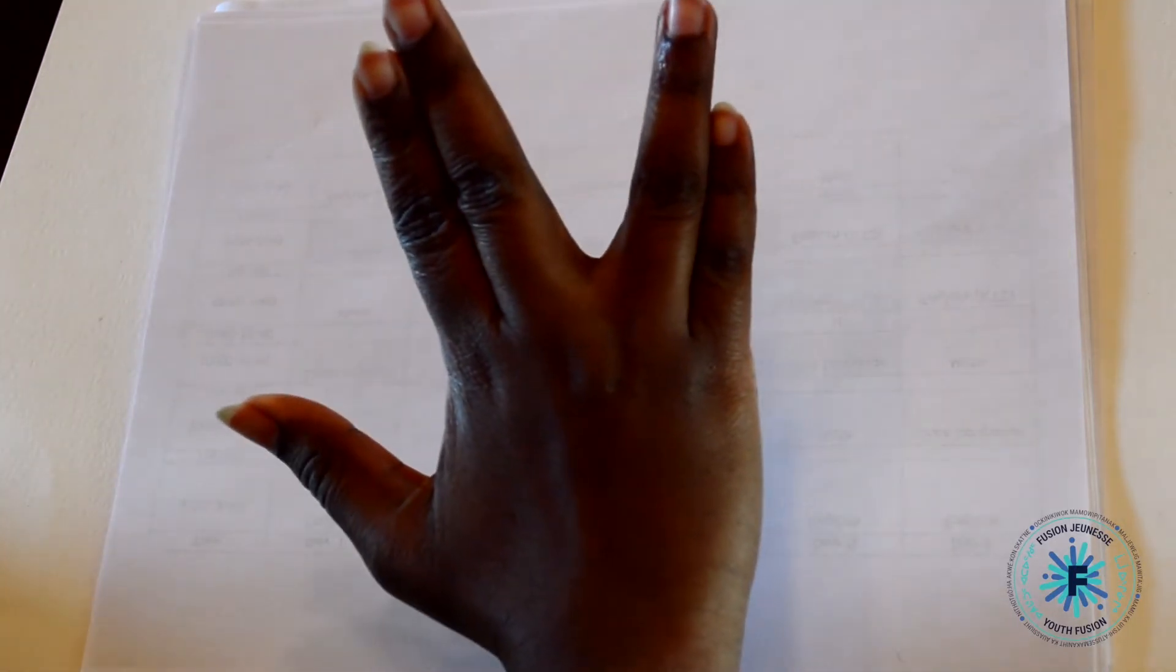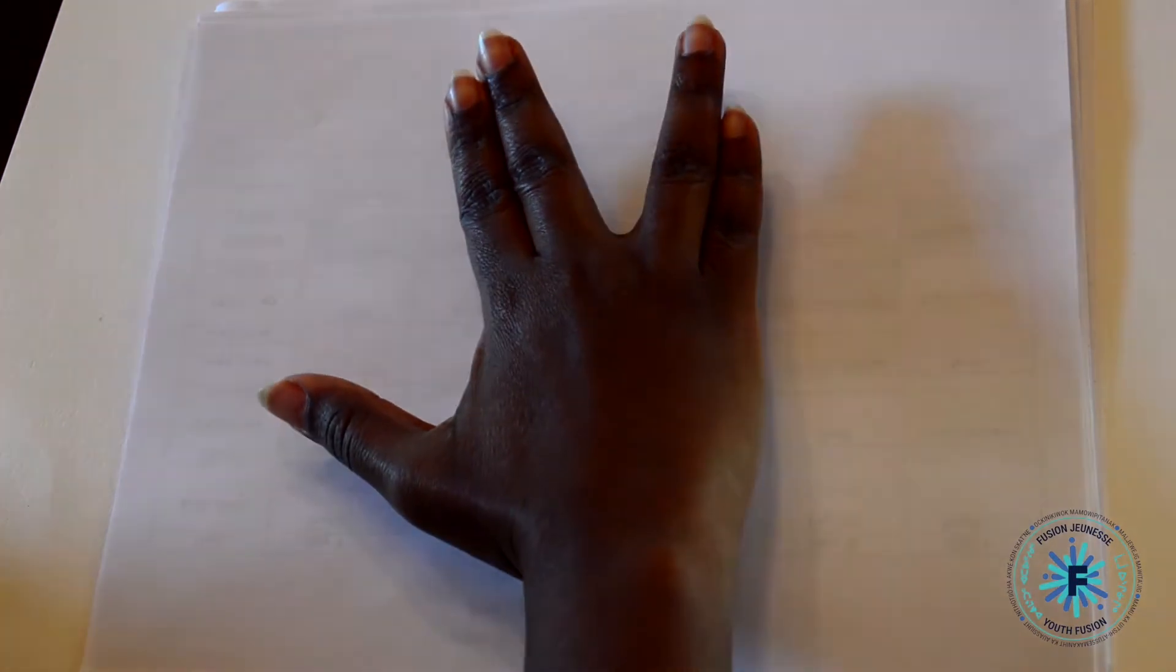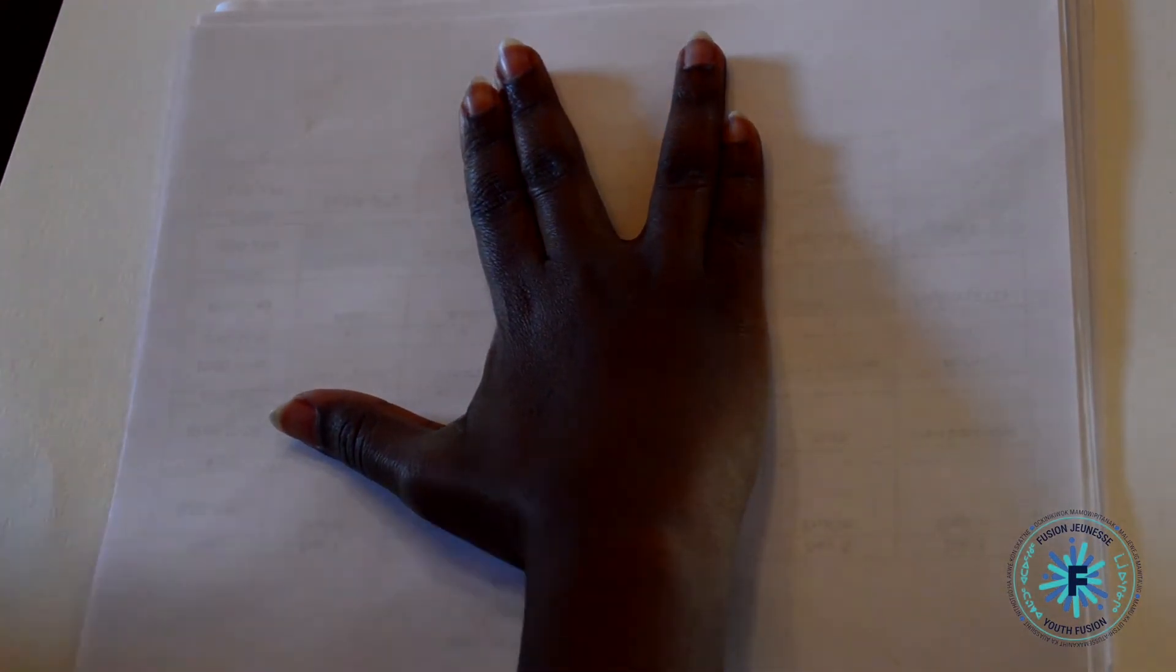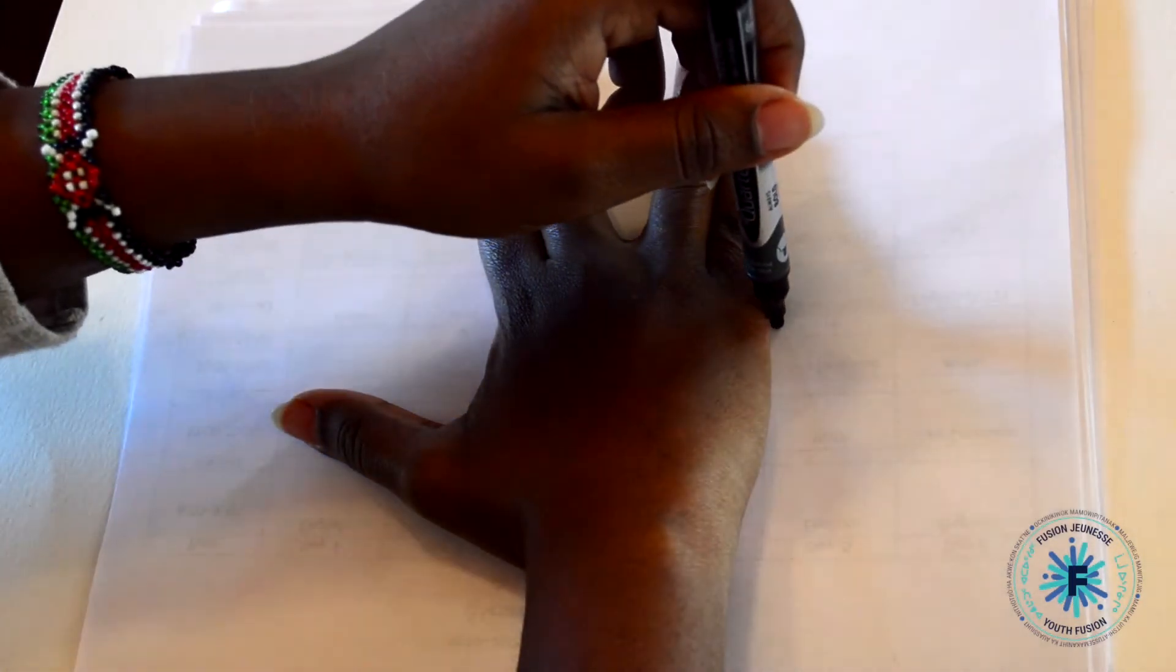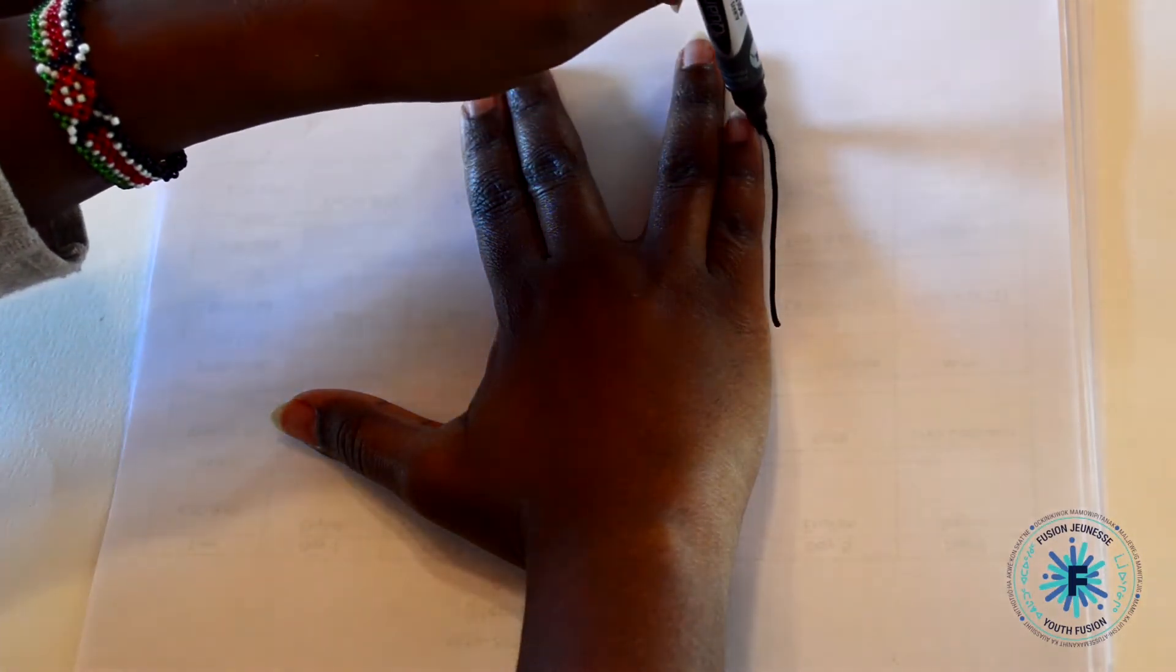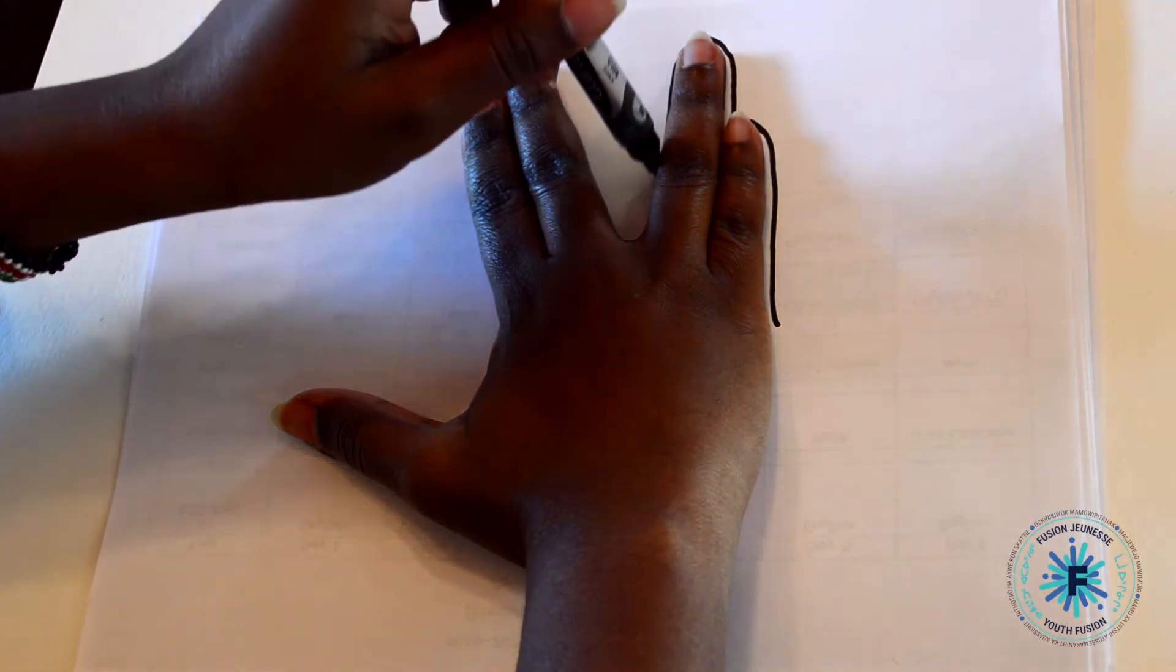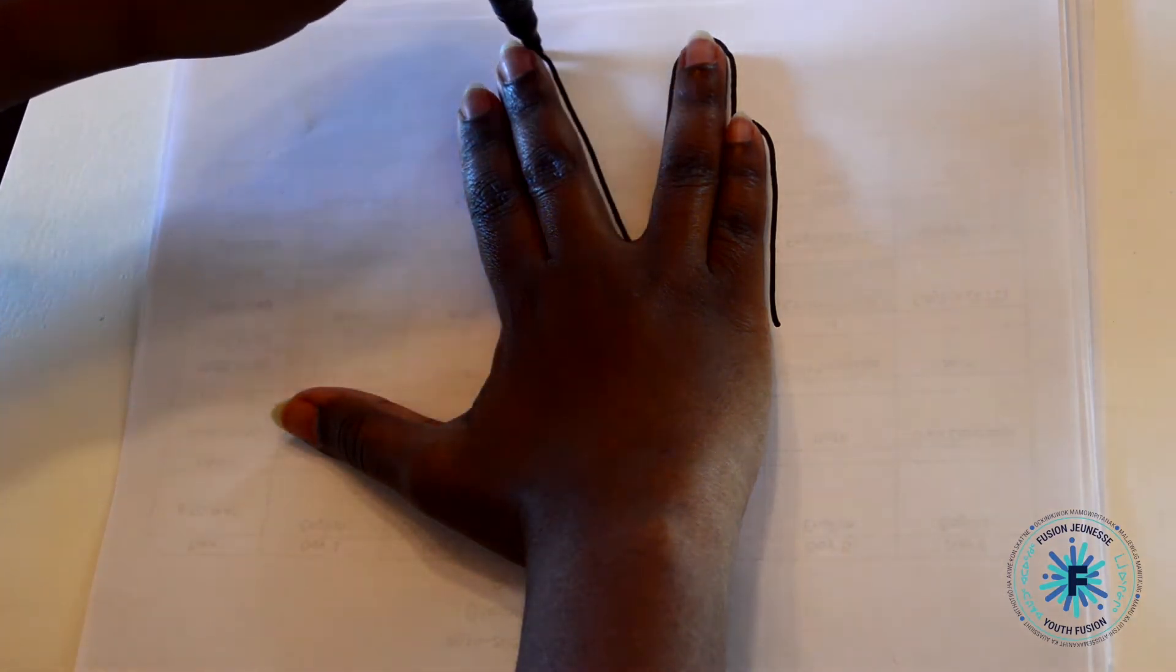Spread your fingers into a v-shape with your thumb sticking out and place your hand on the paper. Using a pencil, pen or marker, trace a line from the bottom of your pinky, following the shape of your fingers all the way to the end of your thumb.